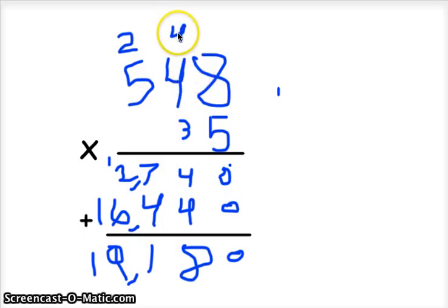4 times 5 equals 20, and then if you add the 4 equals 24, write the 4 down, carry the 2.